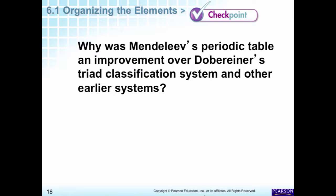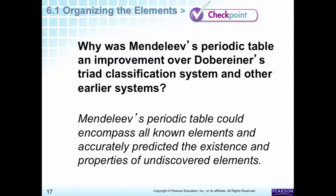Why was Mendeleev's periodic table an improvement over Döbereiner's triad classification system? It could predict new elements — Mendeleev's periodic table could encompass all known elements and accurately predicted the existence and properties of undiscovered elements. Döbereiner didn't use all the elements, whereas Mendeleev used all the elements that were known, and some that weren't even discovered yet.